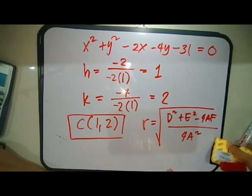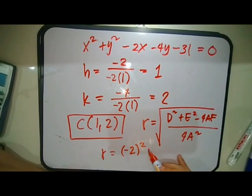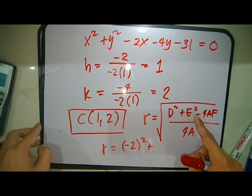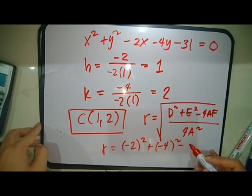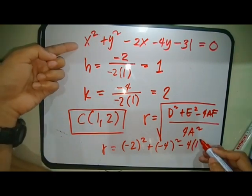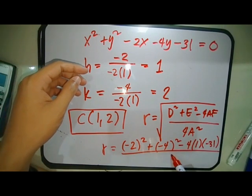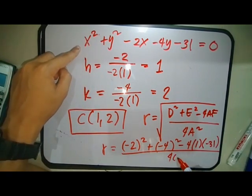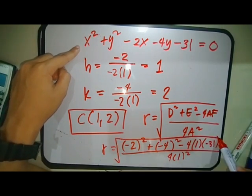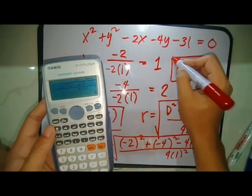For the radius using the formula: r = √[(D² + E² − 4AF) / (4A²)]. Substituting D = −2, E = −4, A = 1, F = −31: r = √[(4 + 16 − 4(1)(−31)) / (4 × 1)] = √[(4 + 16 + 124) / 4] = √[144/4] = √36 = 6. We arrive at the same answer. Use whichever method you prefer.